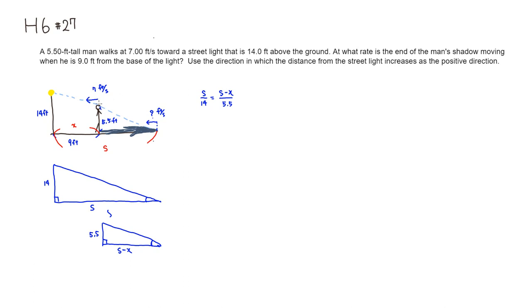Then you can see what's given. The person is walking toward the street light, so the rate of change of X with respect to time T is negative 7, because the distance is shrinking, when X equals 9.